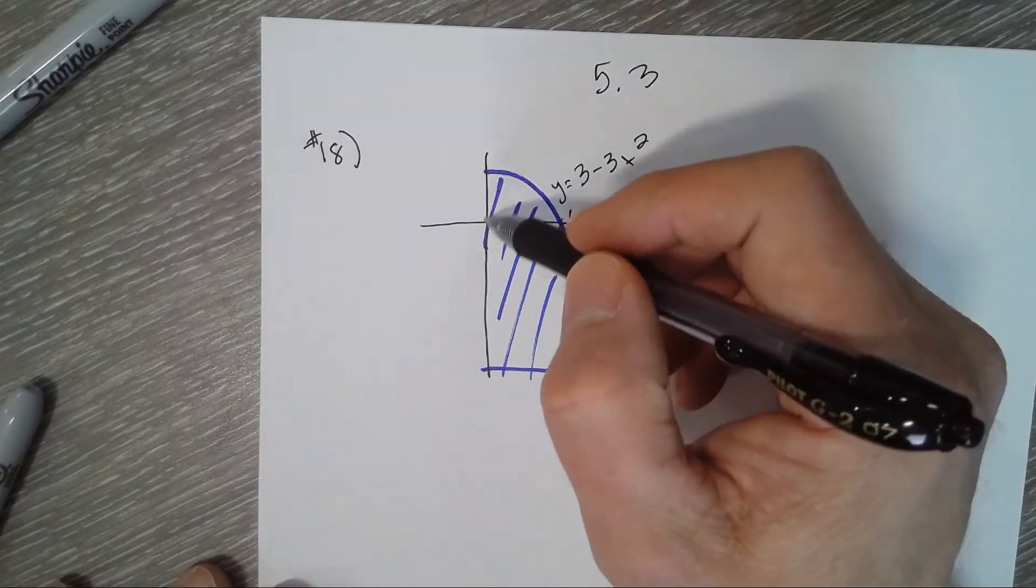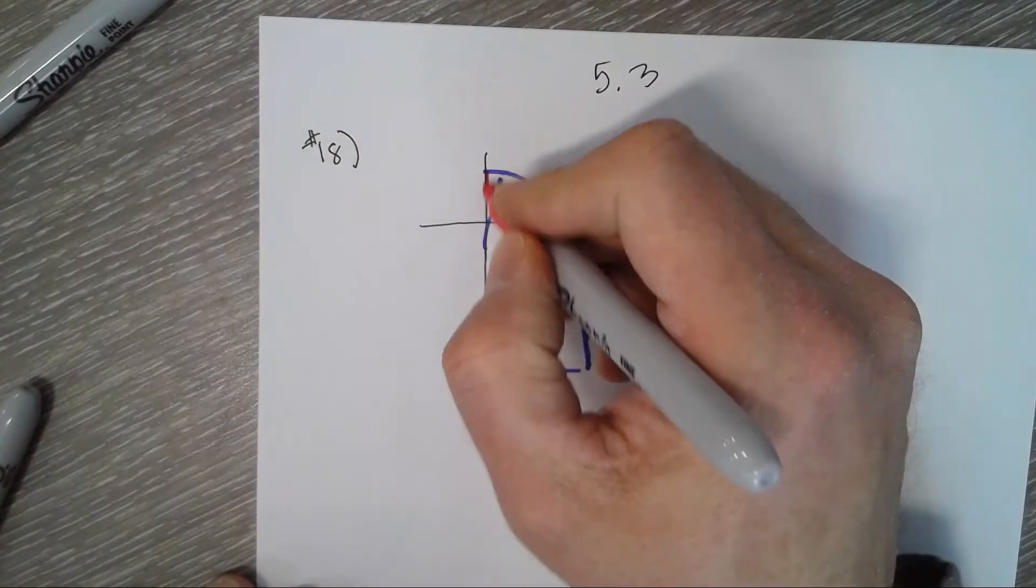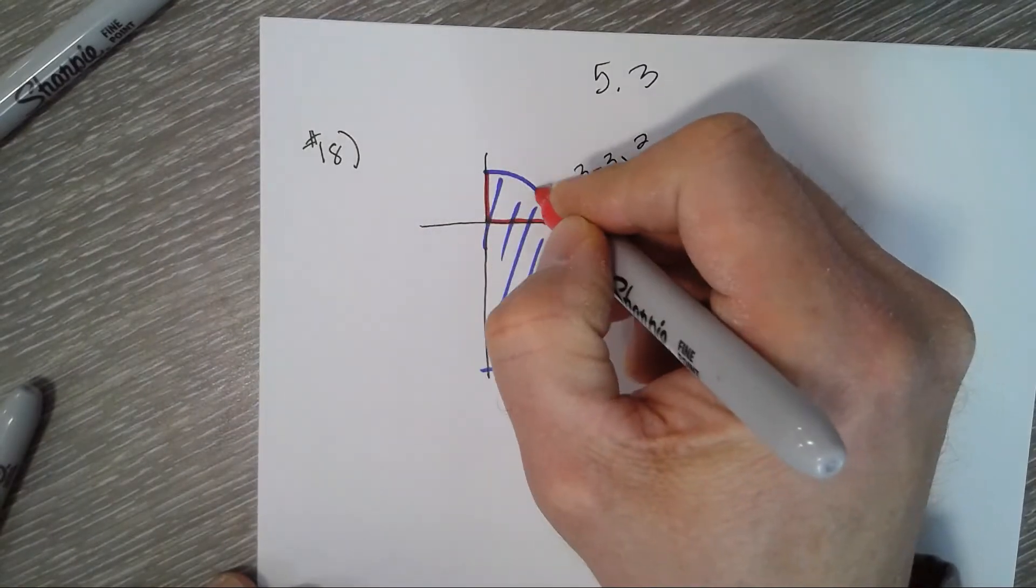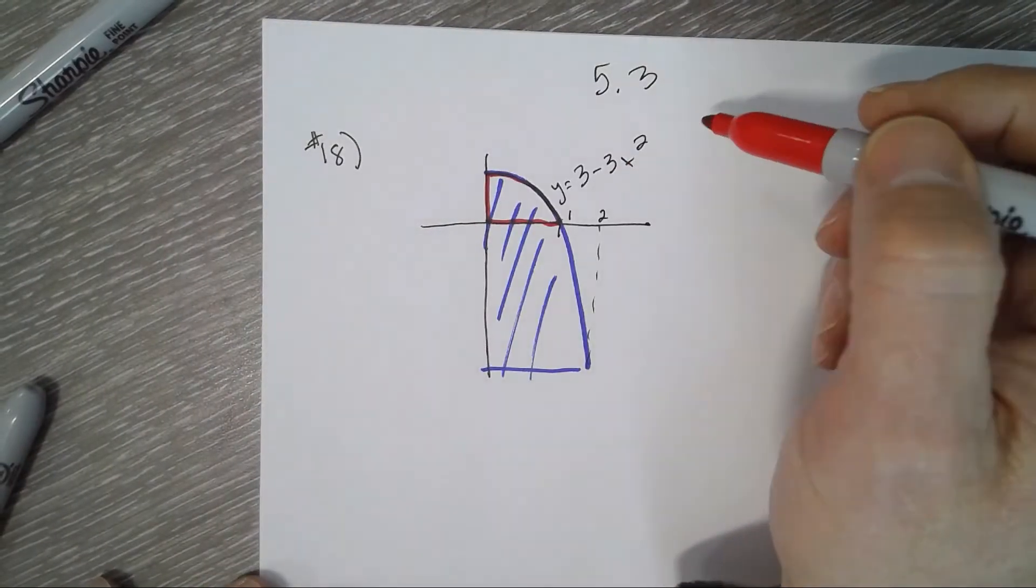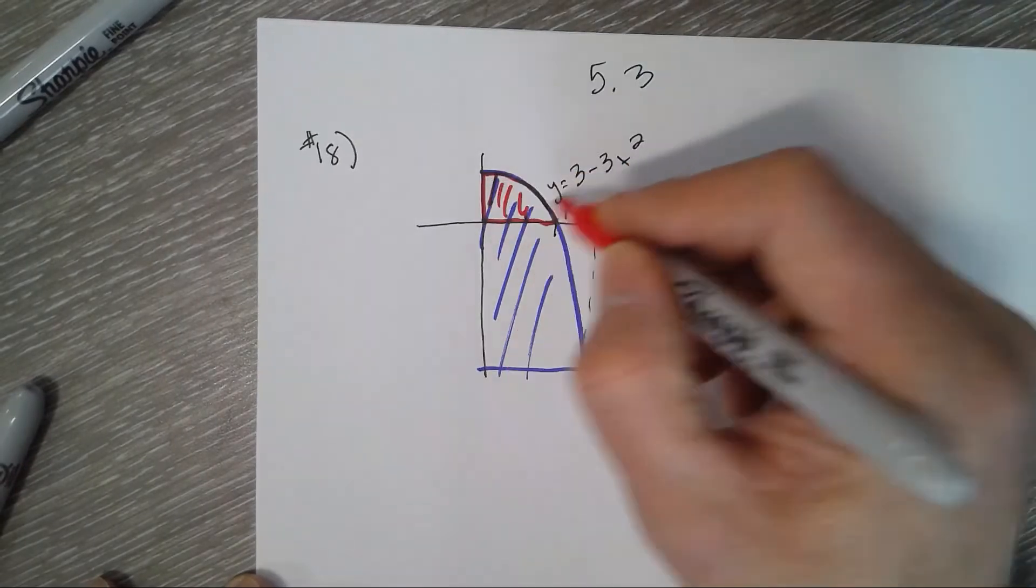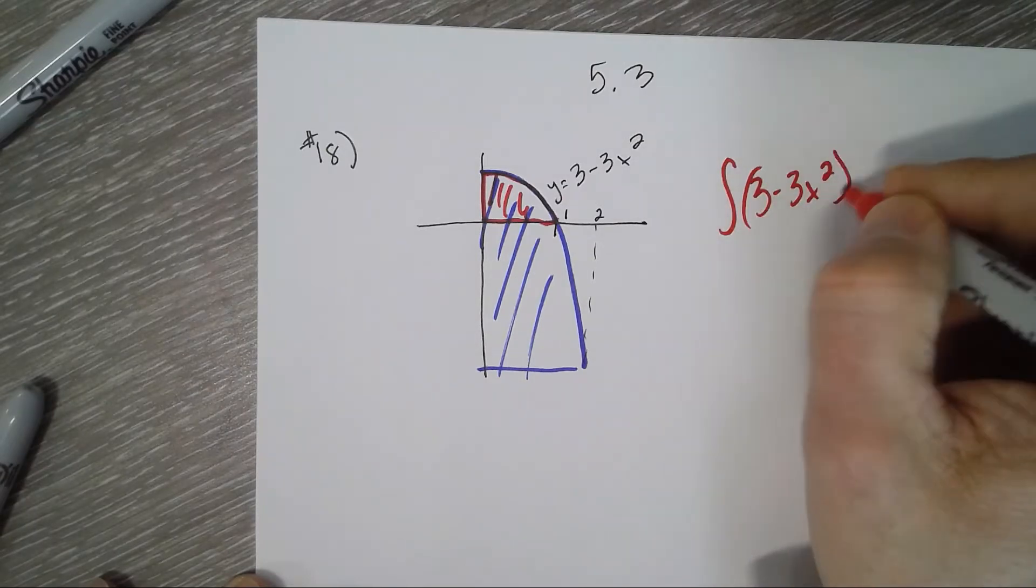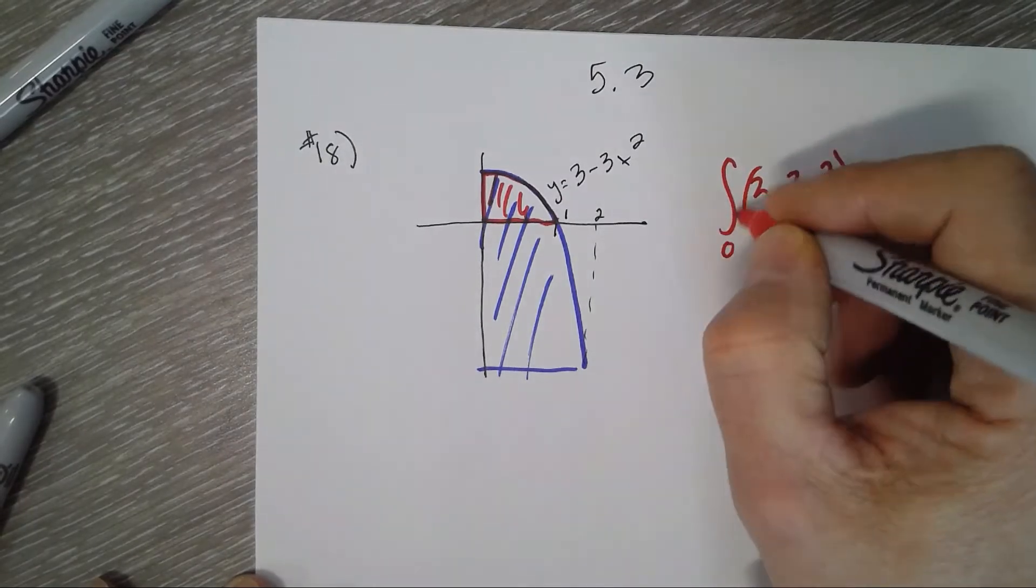So we can find this area, this little clump right here, by just finding the integral of 3 minus 3x squared from 0 to 1. So the red area would be the integral of 3 minus 3x squared from 0 to 1. That's going to be positive already, so we're good with that.